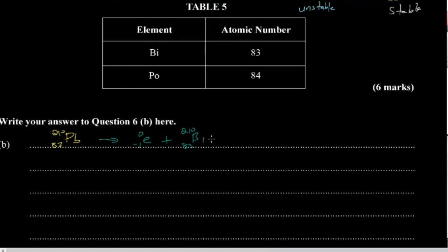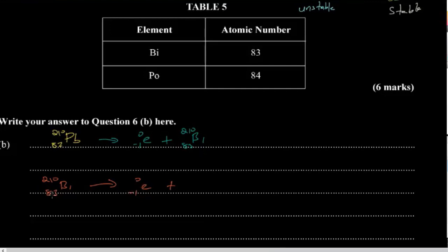That's the first equation. Now bismuth — 83, 210 — is also going to undergo beta decay, giving off a beta particle. The atomic number increases by one and the mass number stays the same, forming polonium: 84, 210.